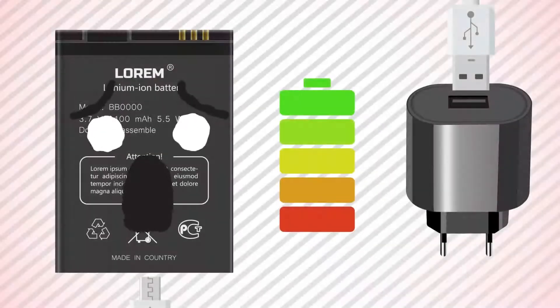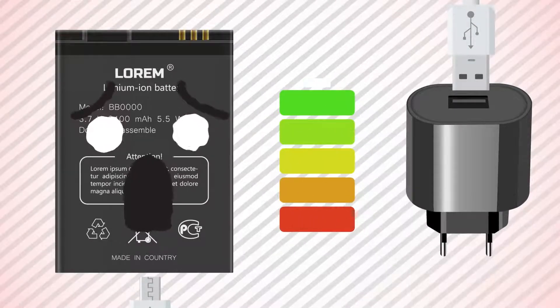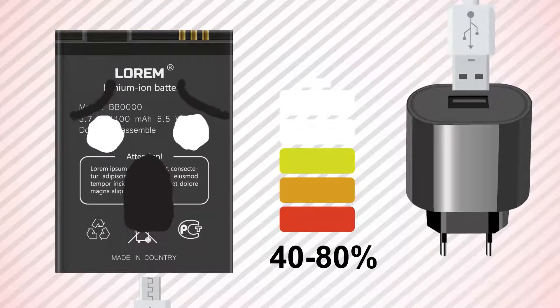However, this doesn't mean that you can constantly keep your phone charging. You need to let the battery work on its own, too. That's why you should try to keep the charge between 40 and 80% to extend the life of your battery.